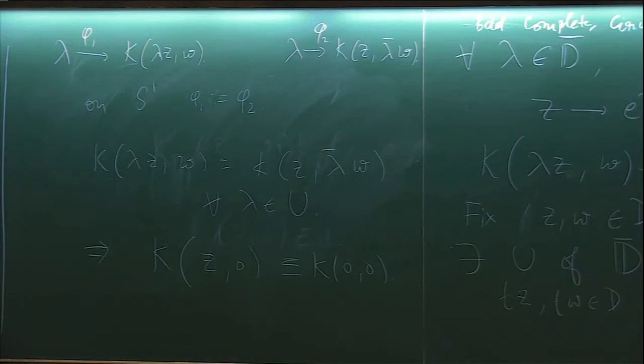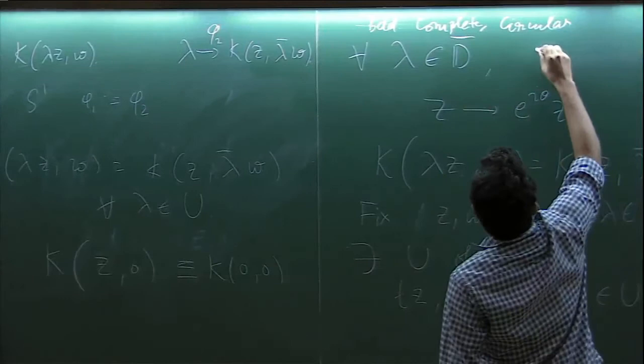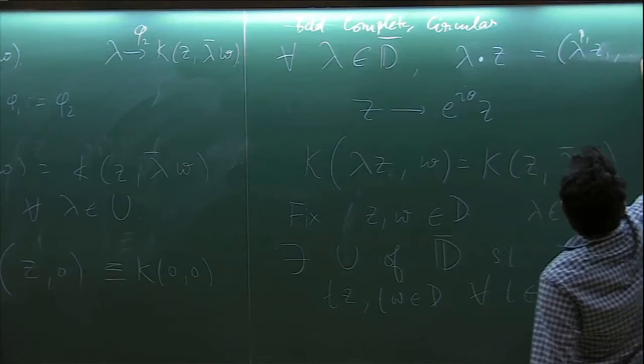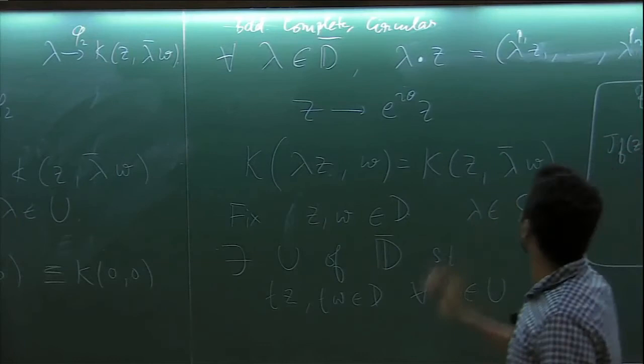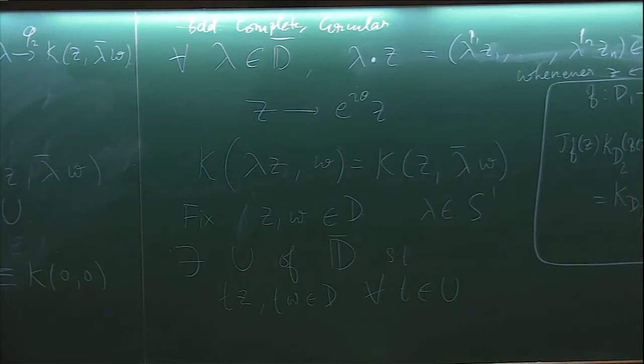And by identity theorem we get that k of lambda z w is k of z lambda bar w for all lambda in u. So in particular we can conclude that k of z comma 0 is identically equal to k of 0 comma 0, a constant. So in other words 1 is in the Bergman span. So this tells us that even complete circular domains are quadrature domains. A similar argument will tell us that complete p1 to pn circular domains are also quadrature domains. So I will not spend more time but I will just tell what a p1 to pn circular domain is. For every lambda in d bar we have an action, which let me now define by a dot, bigger dot, whenever z belongs to d.